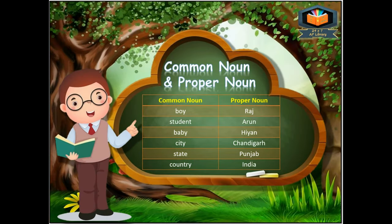Let's understand the difference between common and proper noun. Common noun is 'boy'; proper noun is 'Raj' — Raj is the name of a boy. 'Student' is common noun; the student's name 'Arun' is proper noun.